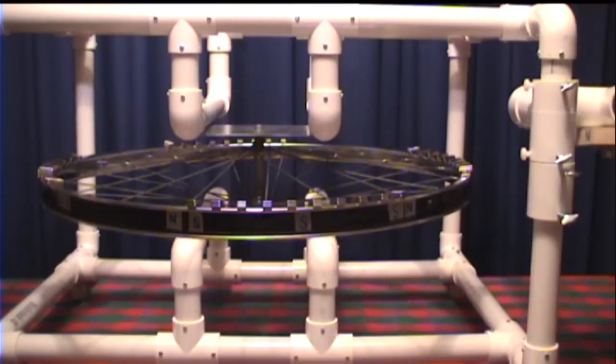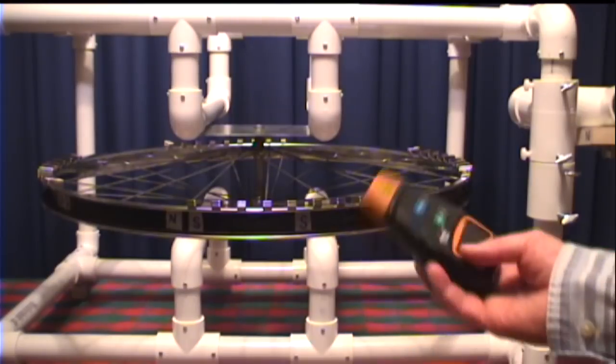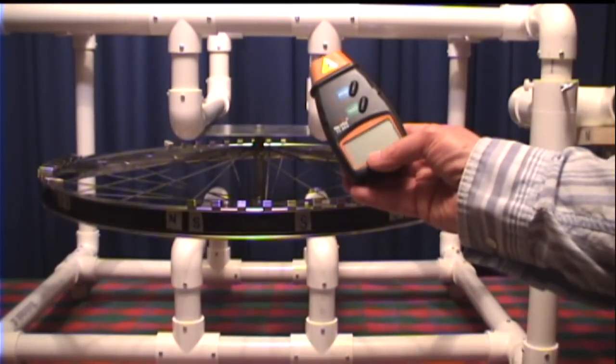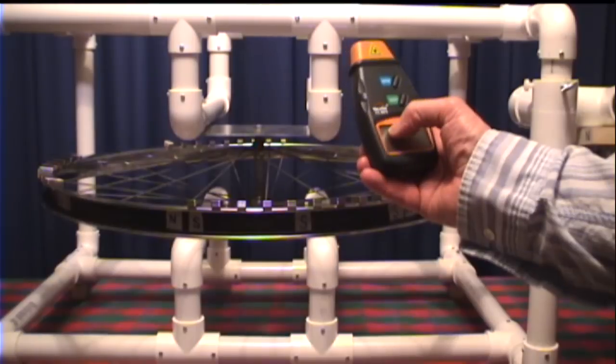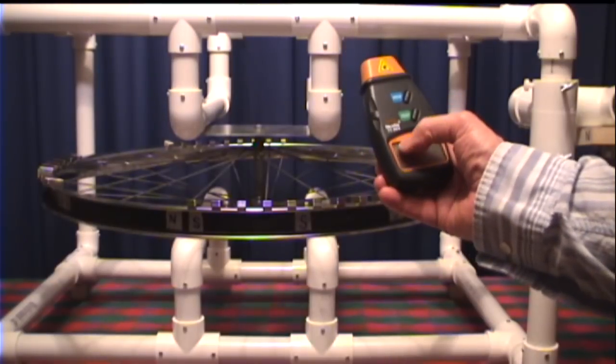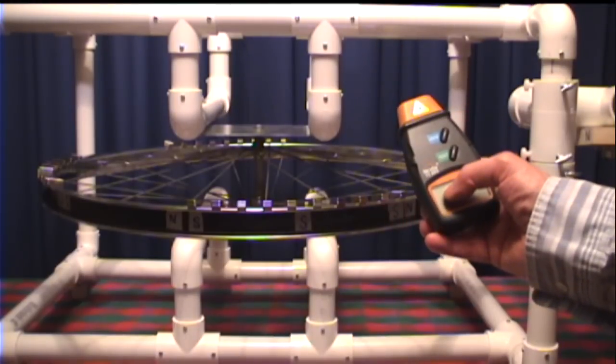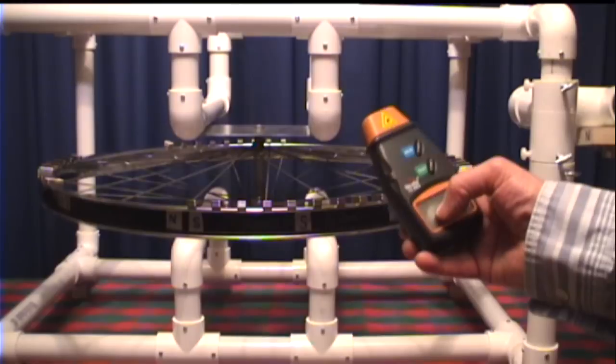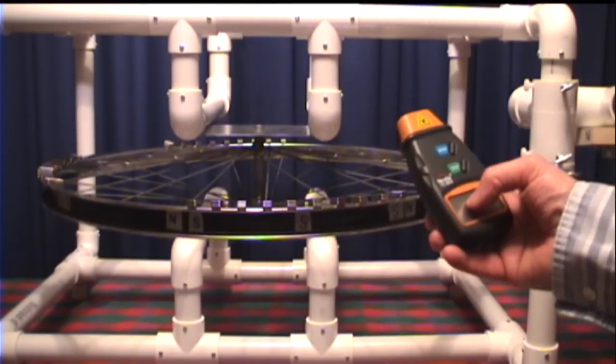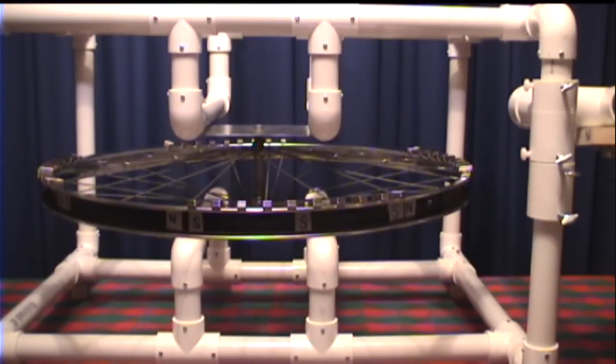Now, to start off this spin demonstration, I'm going to be using a digital tachometer to get an idea of how fast we're going to be able to spin this using this faulty timing method that I've been using.